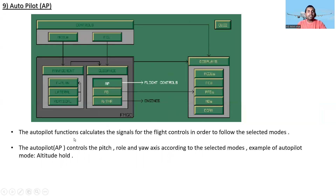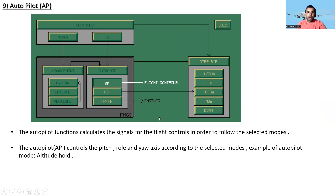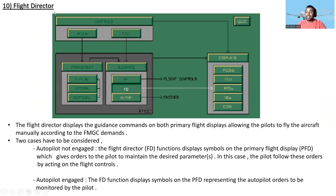Under guidance — Autopilot: the autopilot function calculates the signals for the flight controls in order to follow the selected modes. The autopilot controls the pitch, roll, and yaw axes according to the selected mode. An example of an autopilot mode is altitude hold.